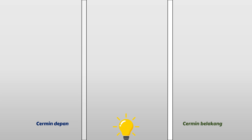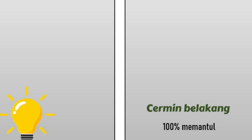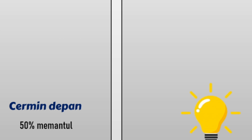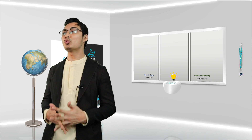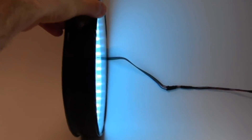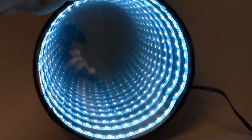Dan yang ni lain sikit konsep dia macam cermin depan belakang tadi. Caranya adalah kita letak satu sumber cahaya, kemudian kita sandwichkan dengan cermin depan belakang, sumber cahaya tu dekat tengah-tengah. Tapi dua cermin tu tak sama — cermin belakang memantulkan 100% cahaya, tapi cermin depan ni separuh je pantulannya. Separuh cahaya boleh keluar masuk ke dalam mata kita. Cahaya yang dihasilkan oleh lampu dekat dalam tu akan memantul depan dan belakang sepanjang cermin. Tapi sebahagian cahaya akan terlepas pada cermin depan, dan setiap kali cahaya dipantulkan ia akan menjadi semakin malap. Maka terhasillah ilusi portal dimensi alam lain yang awesome ni.